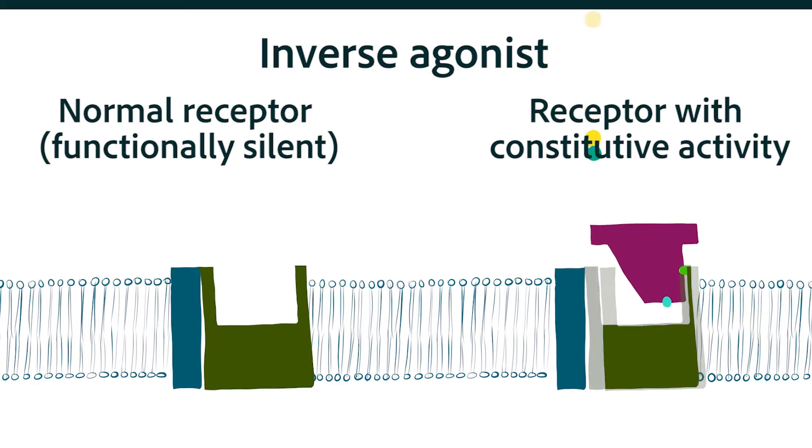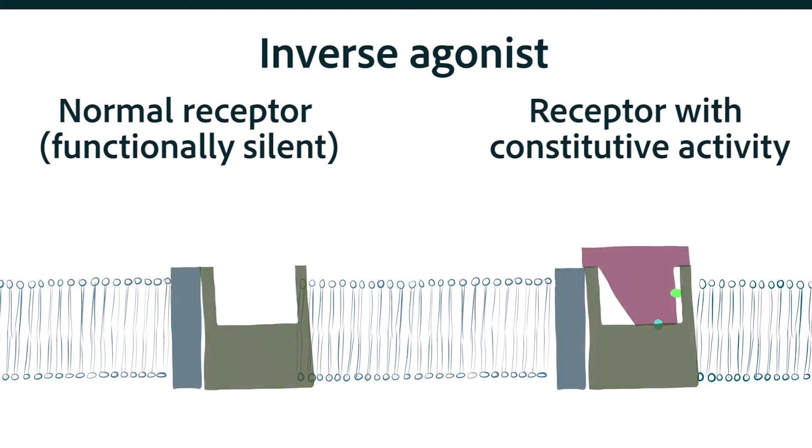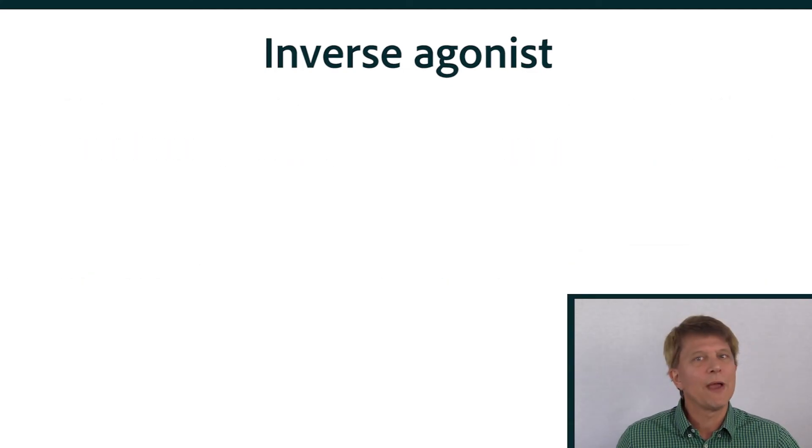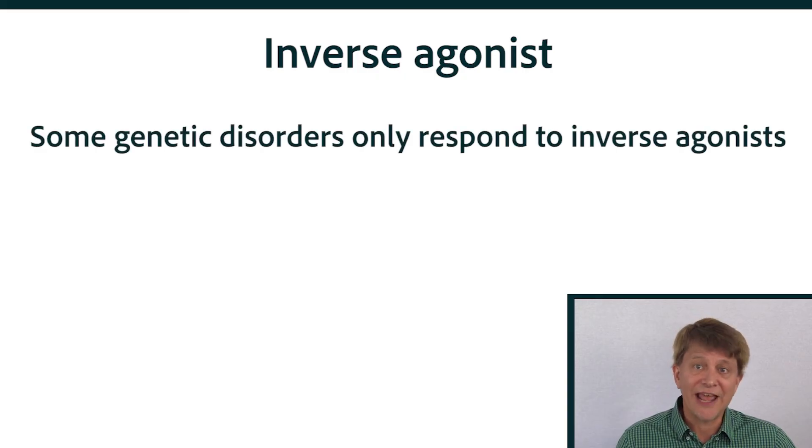An inverse agonist inhibits that constitutive activity. So if you want to remember it simplistically, just think of the inverse agonist as being an antagonist with some extra benefits. There are some genetic disorders, however, that will only respond to the inverse agonist.